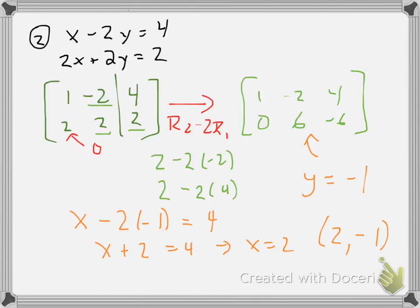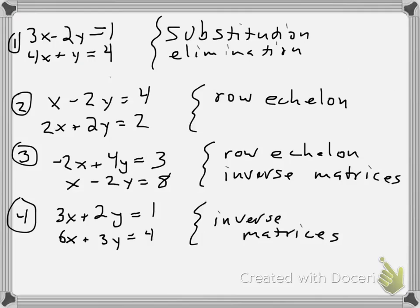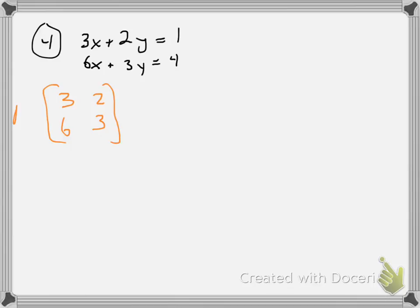Alright, last problem, number 4. So, number 4, we're going to try doing strictly this time with using the inverse matrices. And I think this time this one will work. So, this will be my matrix A. My matrix B will be my solutions there, 1 and 4. And what I need to do is find A inverse.